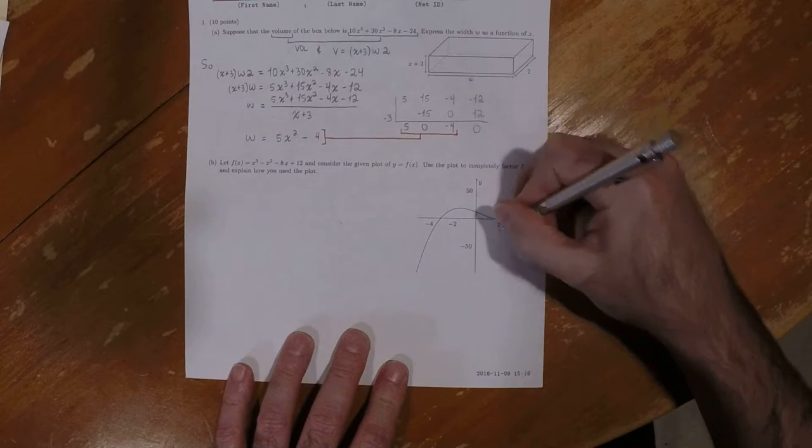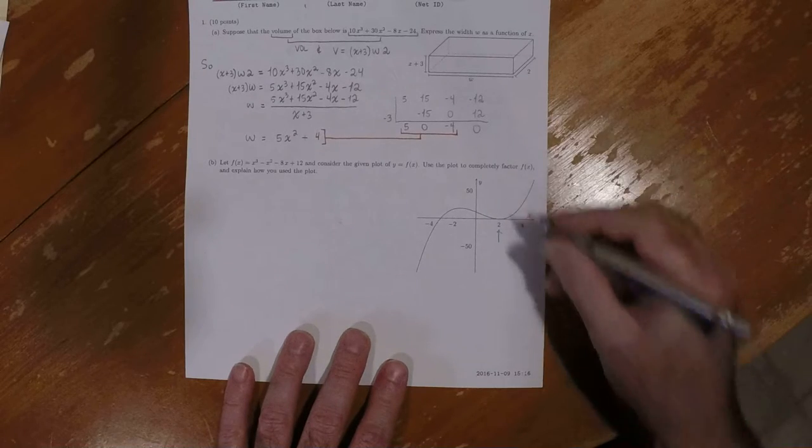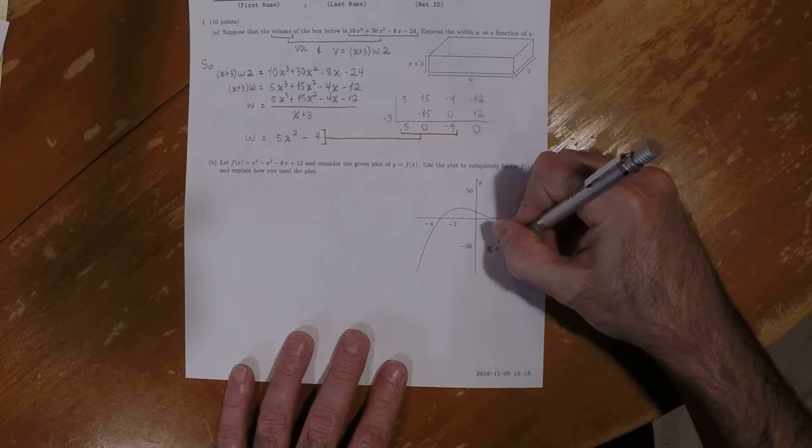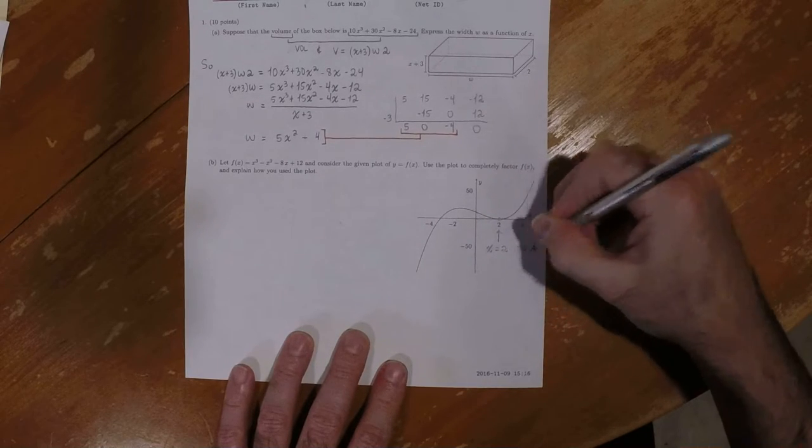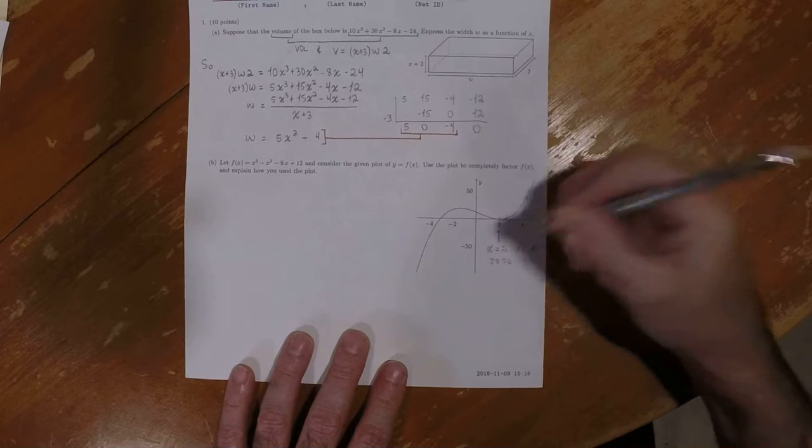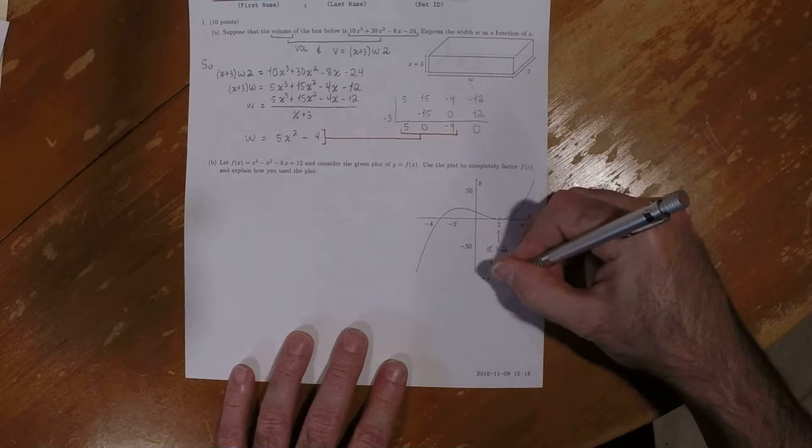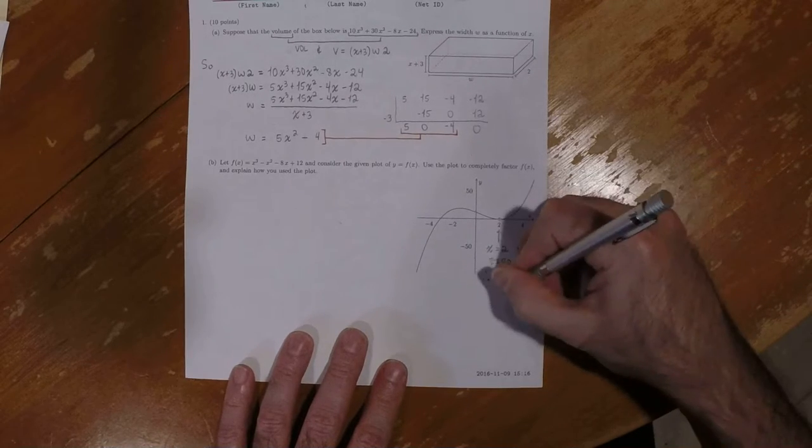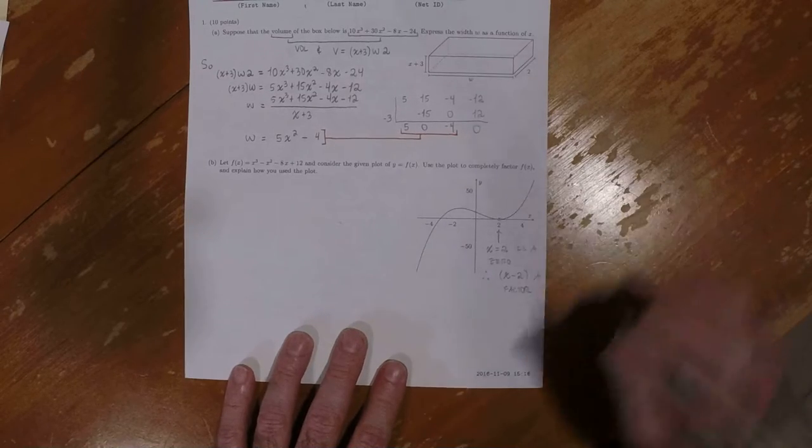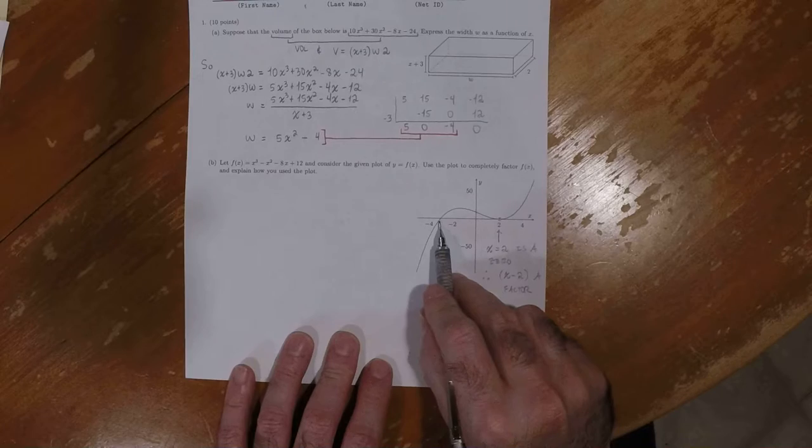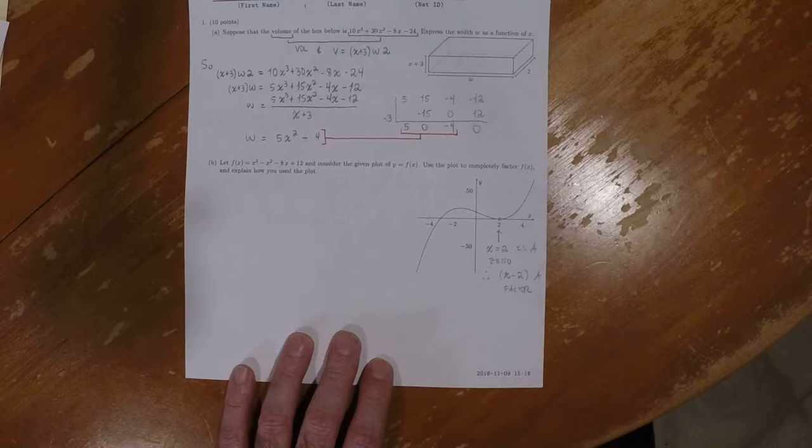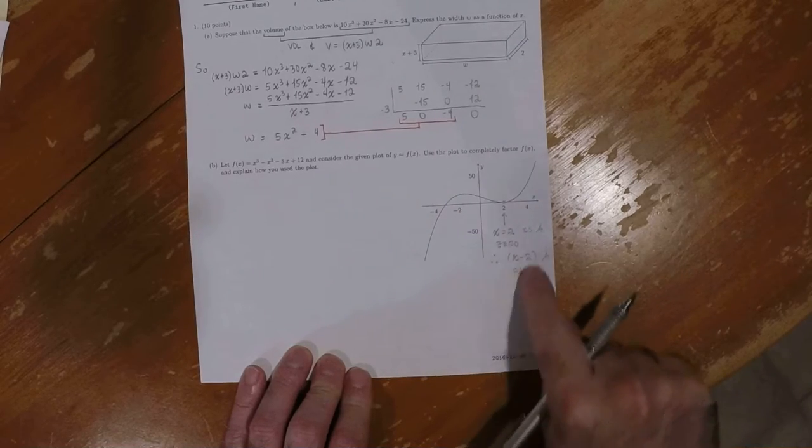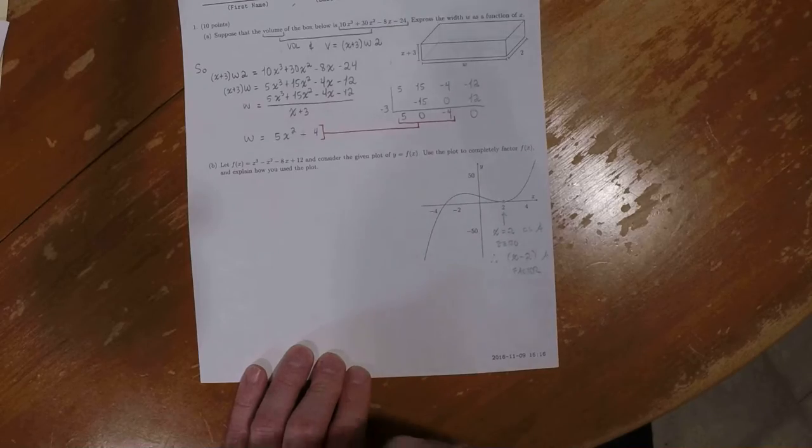Okay. Well, right here, this is the fact that it's touching right there. It's telling us that x equal to 2 is a zero. And therefore, that's telling us that x minus 2 is a factor. It looks like negative 3 is also a zero. But we'll just need one, and I think we'll be able to take it from there. So this is the information you can extract from the plot.